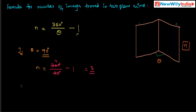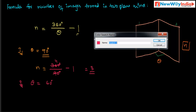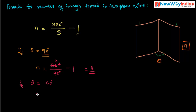If the angle of inclination theta is 60 degrees, then how many images are formed? n = 360° ÷ 60° − 1 = 6 − 1 = 5. So five images are formed when the angle between the mirrors is 60 degrees.